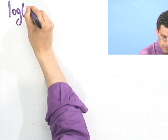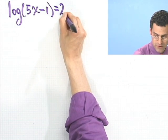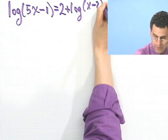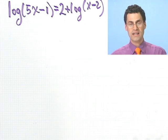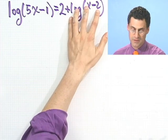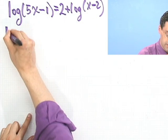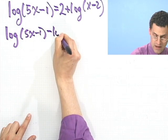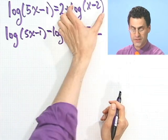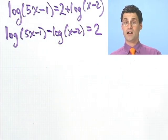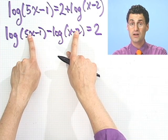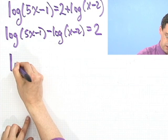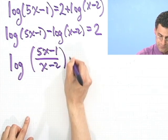Let's solve this equation: log of 5x minus 1 equals 2 plus log of x minus 2. Remember, a naked log means an invisible base 10. The strategy is to bring all the logs together into one big log. So I'll subtract log(x minus 2) to this side, giving log(5x minus 1) minus log(x minus 2) equals 2. Now I have the logs together, and the difference of logs is the log of a quotient. So this becomes log of (5x minus 1) over (x minus 2) equals 2.